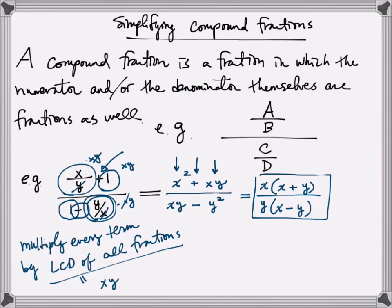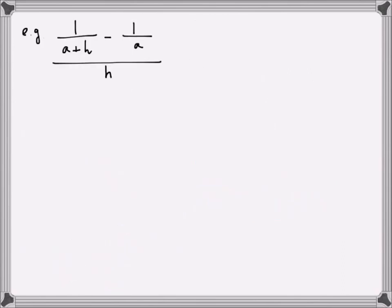I personally prefer Method 2, but it takes practice to appreciate it and there is room for mistakes. So start with whatever you're comfortable with and eventually move to something more advanced. Let's practice a few more examples. Here we have 1 over (a plus h) minus 1 over a, all divided by h. Feel free to practice whichever approach you're comfortable with, then come back for a solution.